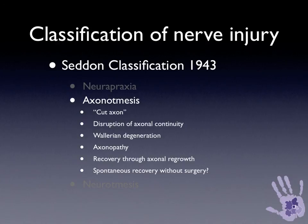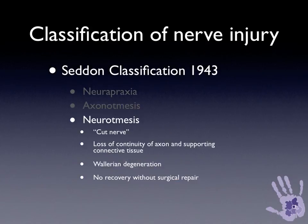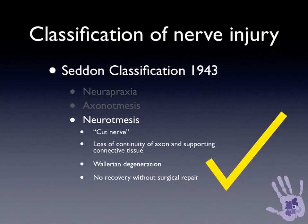It is possible in minor injuries to have spontaneous recovery without surgery, but more severe types of axonal injury may require surgical intervention. Axonotmesis is therefore not an absolute classification that describes all types of axonal injury. Neurotomesis is a cut nerve with loss of continuity of the axon and all of the supporting connective tissue. Wallerian degeneration occurs and recovery is not possible without a surgical repair. This definition still stands today.